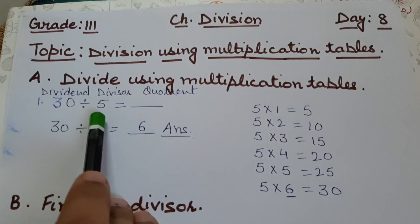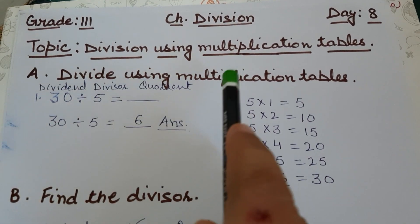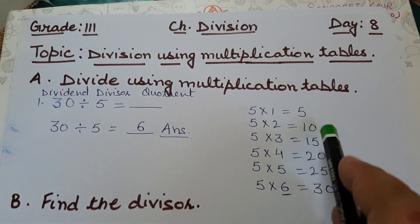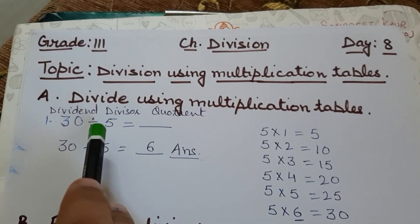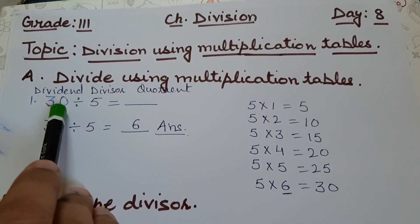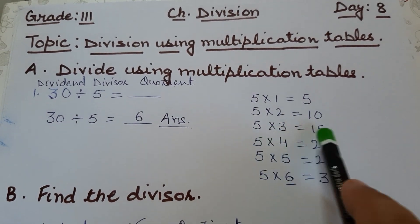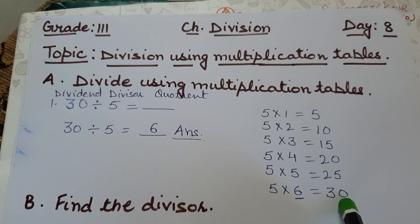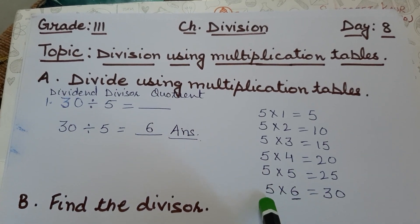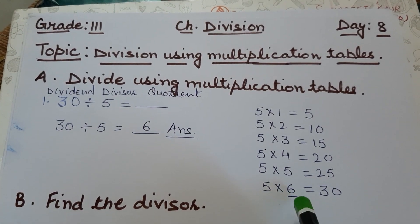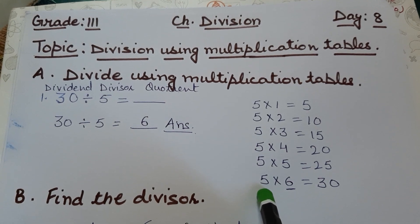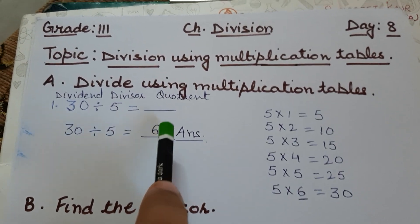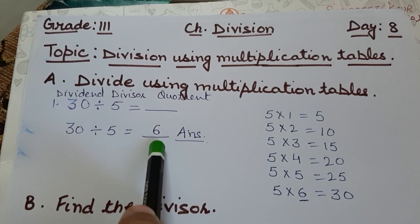The divisor here is 5, so recall the 5-times table: 5 ones are 5, 5 twos are 10, 5 threes are 15, 5 fours are 20, 5 fives are 25, 5 sixes are 30. We get our dividend 30 here. So how many times is 5 equal to 30? Six times. So six will be our quotient. By using tables, you can find the quotient.